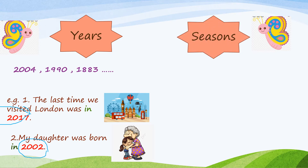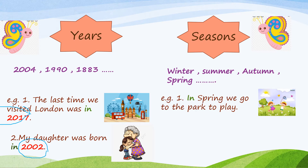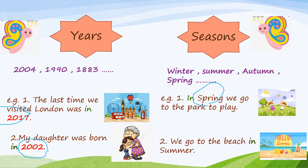Also, we have to put 'in' before a season. What are the seasons of the year? Winter, summer, autumn, spring. For example, in spring we go to the park to play. Spring is one of the seasons of the year, so we have to put 'in' before it. Also, we go to the beach in summer. Summer is one of the seasons of the year, so we have to put 'in' before it.